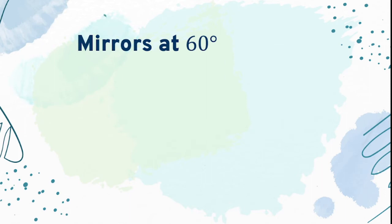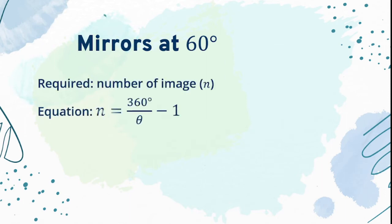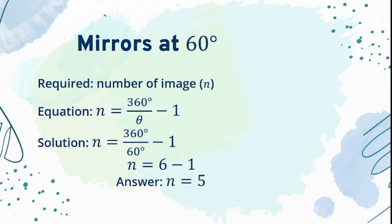If the mirrors are at 60 degrees, looking for the number of images, we will use the equation N equals 360 degrees divided by angle theta minus 1. Substituting the value of 60 to angle theta, we will have N equals 360 degrees divided by 60 degrees minus 1. Getting the quotient of 360 and 60, we will have N equals 6 minus 1. Therefore, the answer is 5 images.